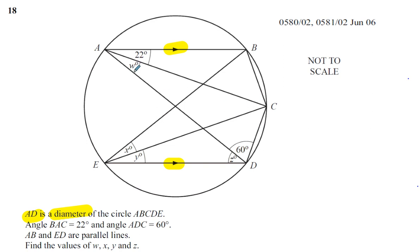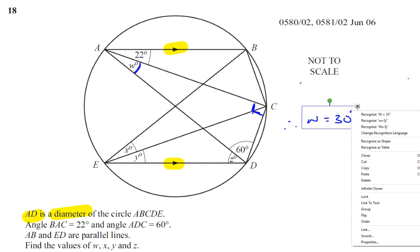Let's start with angle W. They told us that AD is the diameter of the circle. We should know one of the angle properties is that when you have a diameter of the circle, any angle which is subtended by the diameter will be a 90-degree angle. So angle DCA stands on AD, which is the diameter, so angle DCA must be a right angle. Therefore, as that's 90 degrees, W and 60 must add up to 90 degrees, so W must be 30 degrees.